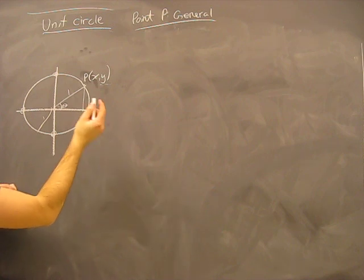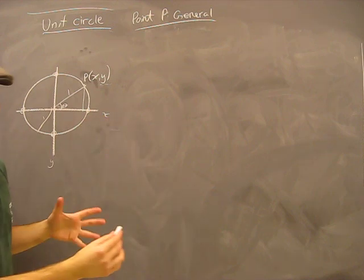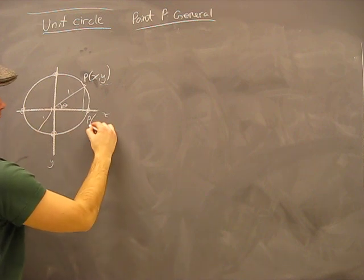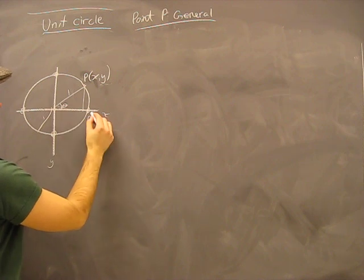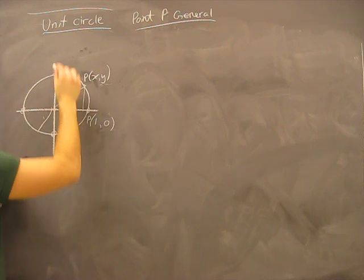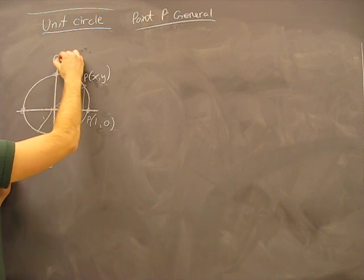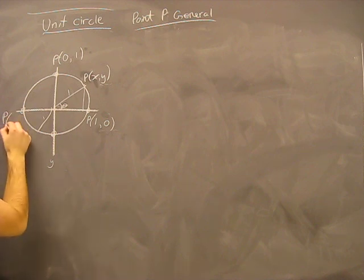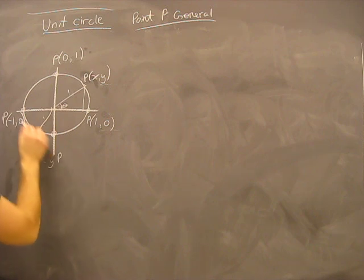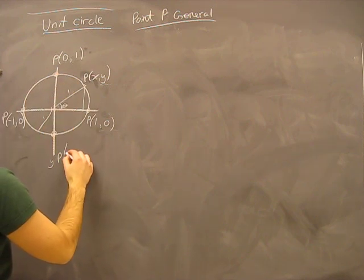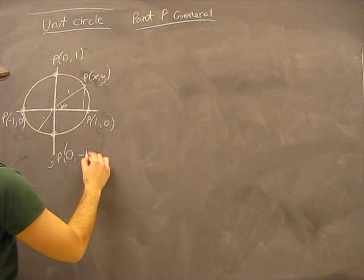So what that does on our axis clearly shows us that we'll have points that will be as follows: here the xy would be x value of one and y value of zero, this one would be x value of zero and y value of one, this would be x value of minus one and y value of zero, and this would be point P here - of course we're talking about two point P's - would be x value of zero and y value of minus one.